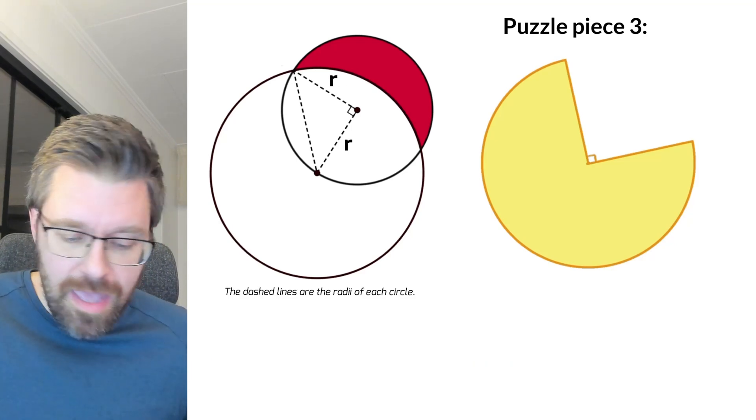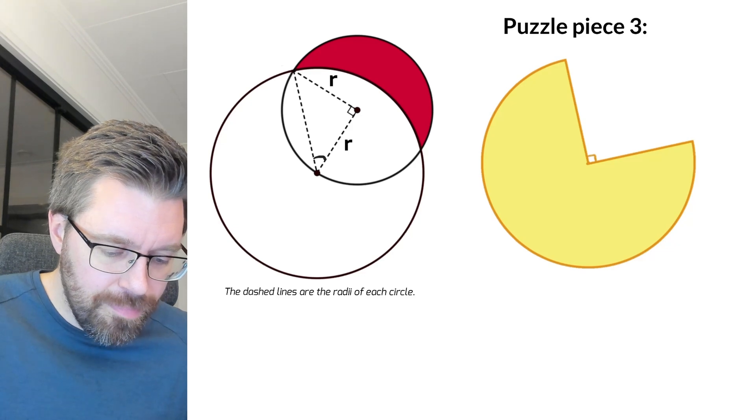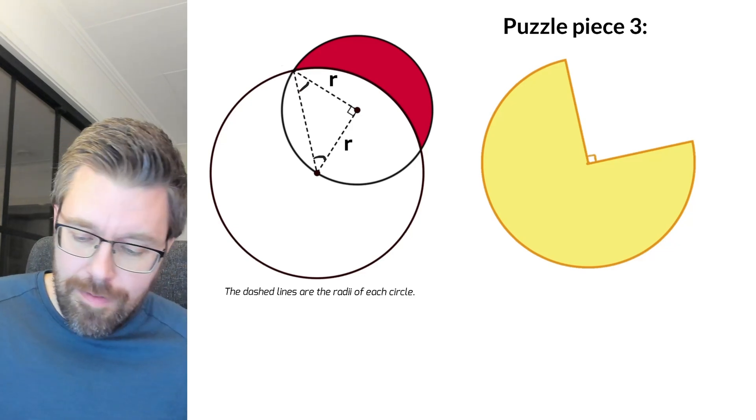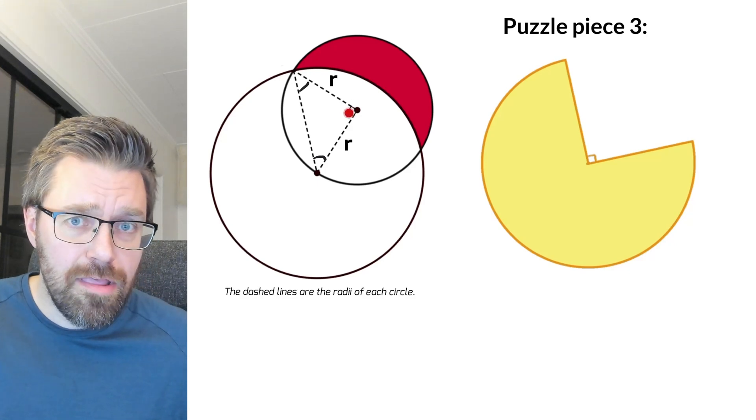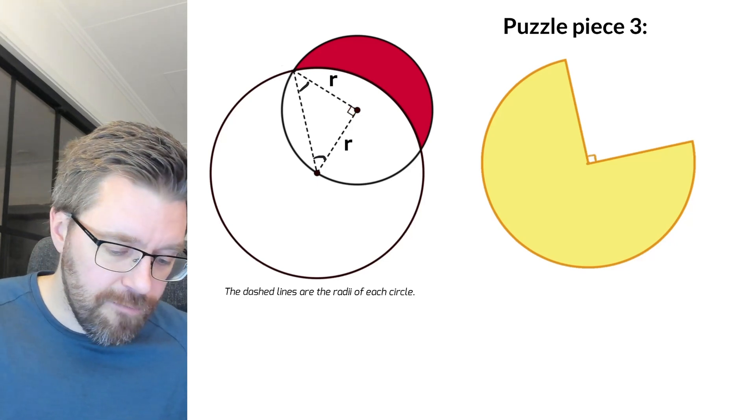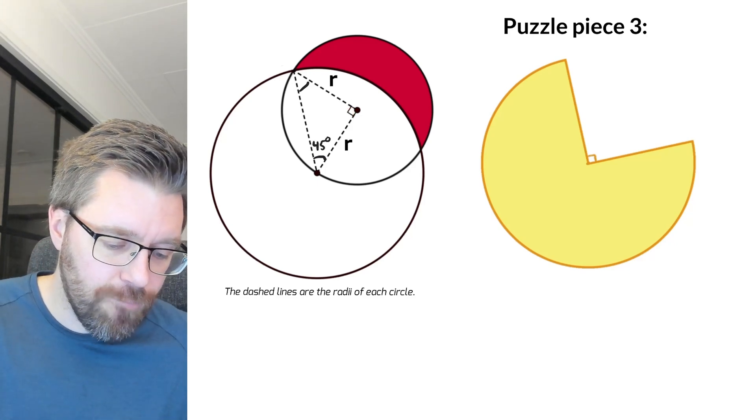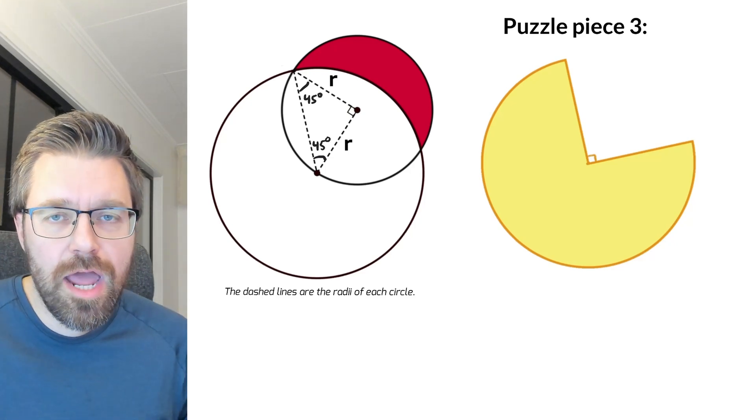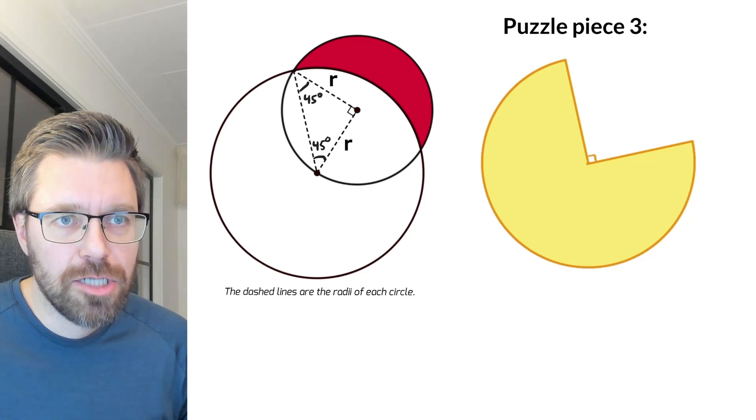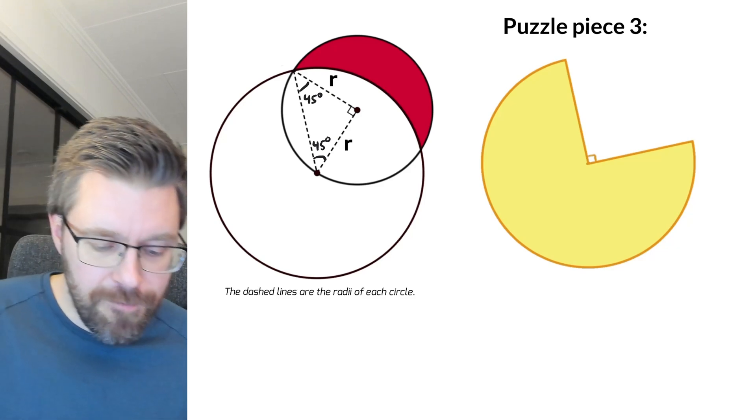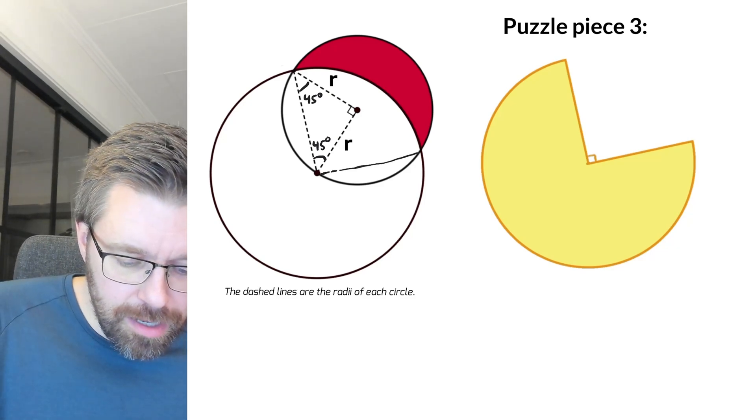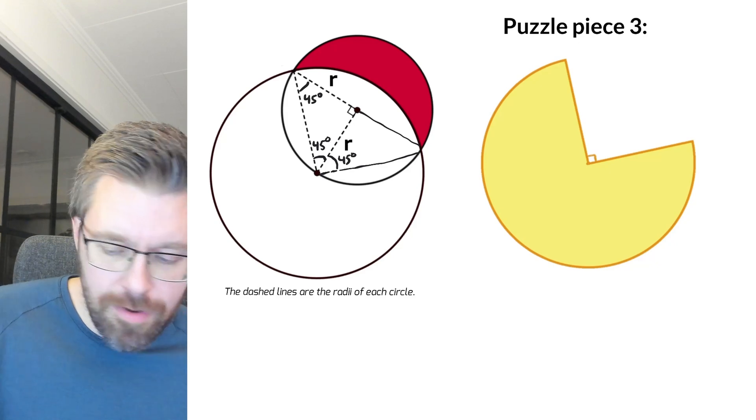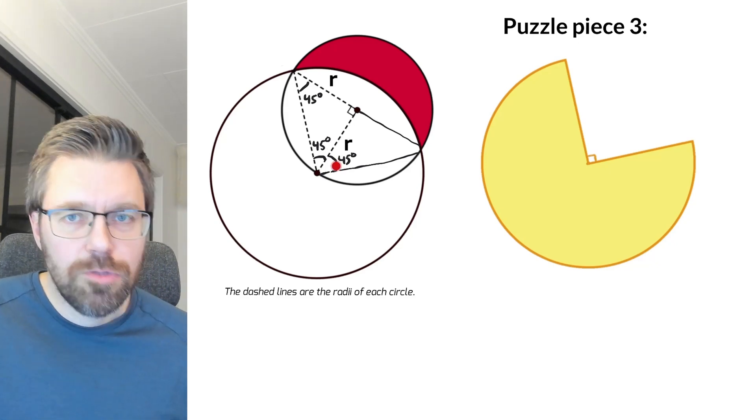And then we know that the two angles here and here also are the same. And because it is 90 degrees here, then we know it is 45 degrees here and 45 degrees here. The sum is always 180 degrees inside a triangle. And then if we do a similar triangle like this, it will be 45 degrees here and then we have 90 degrees.